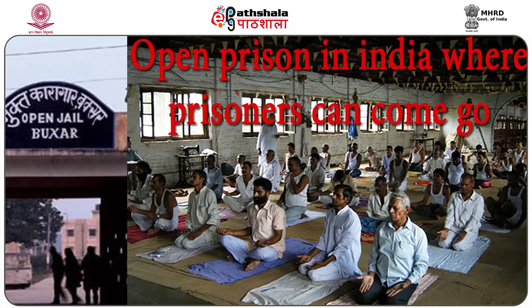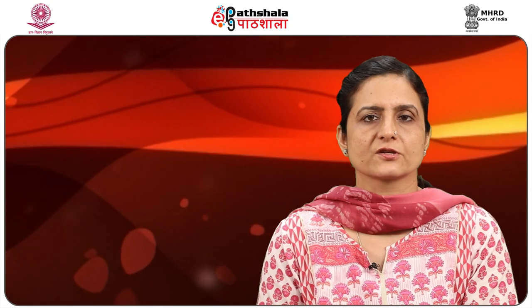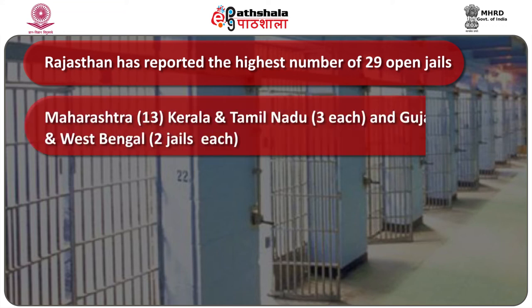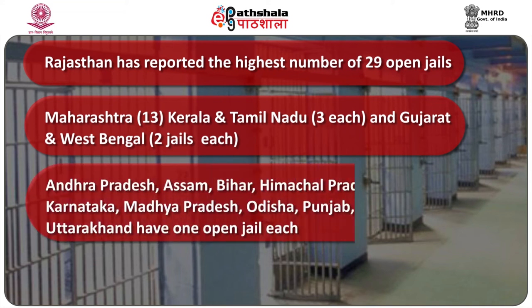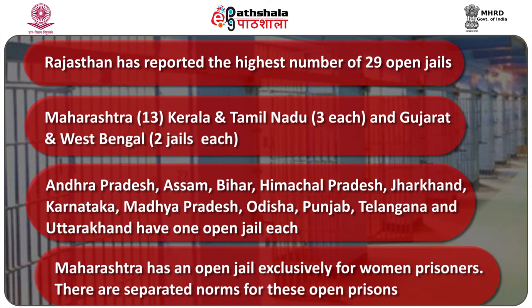Open jails admit prisoners — normally life convicts who have shown good behavior satisfying certain norms prescribed under prison rules — with minimum security, and they are mainly engaged in agricultural activities. Seventeen states have reported functioning open jails. Rajasthan has the highest number at 29, called open camps, followed by Maharashtra with 13, and Kerala and Tamil Nadu with 3 each. Gujarat and West Bengal have 2 open prisons. Some states like Maharashtra and Kerala have open prisons exclusively for women prisoners, separated from other prisoners.